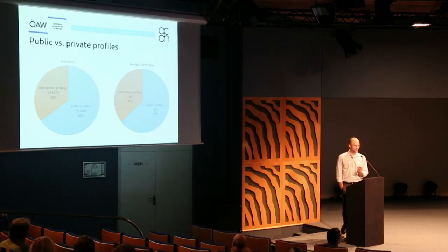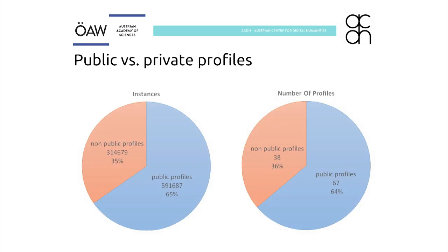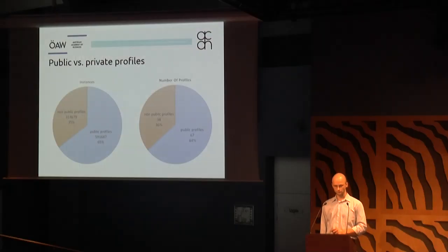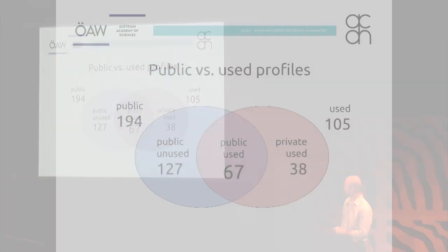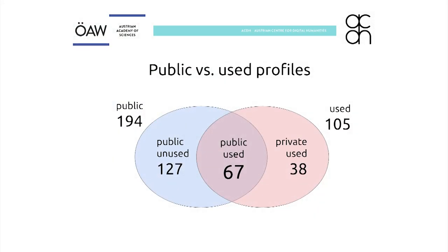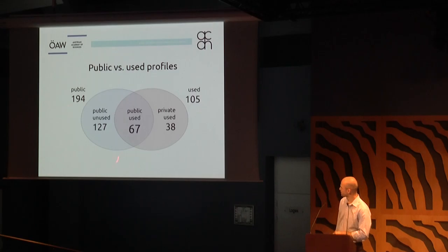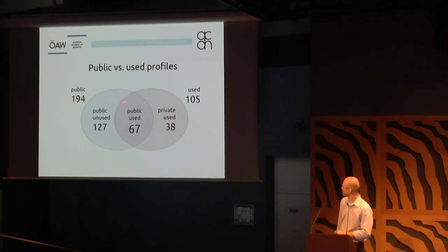We need to look at the public/private profile situation more carefully. We see that almost a third of profiles and a third of instances are based on private profiles. Looking at the numbers: we have 194 public profiles, 105 used profiles, but only 67 public used profiles. So there are 127 public profiles that are not used at all, or at least not encountered in the VLO. And on the other hand, 38 profiles are used but are not public yet.